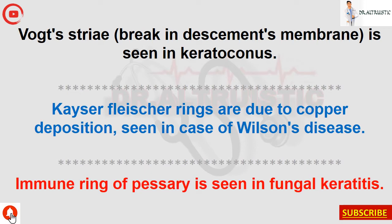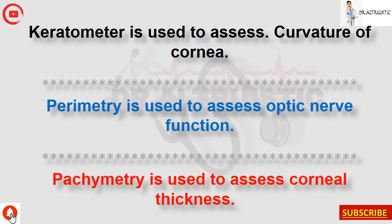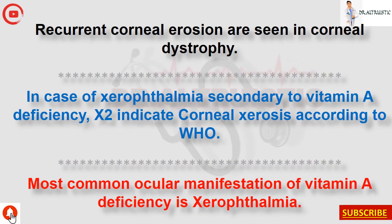Immune ring of Wessely is seen in fungal keratitis. Keratometer is used to assess curvature of the cornea. Perimetry is used to assess optic nerve function. Pachymetry is used to assess corneal thickness. Recurrent corneal erosions are seen in corneal dystrophy. In xerophthalmia secondary to vitamin A deficiency, X2 indicates corneal xerosis according to WHO.